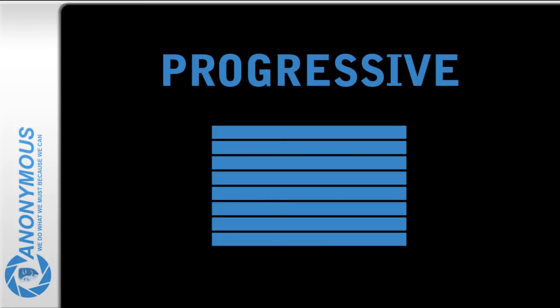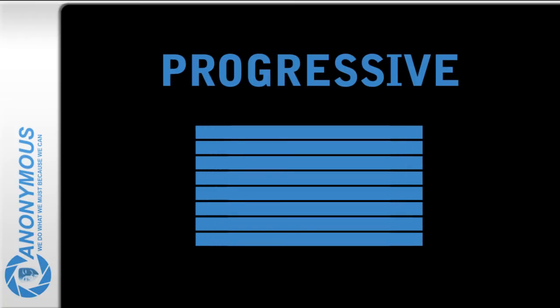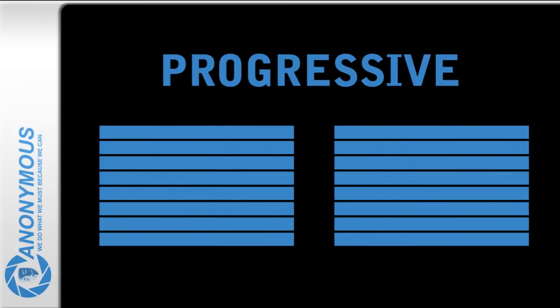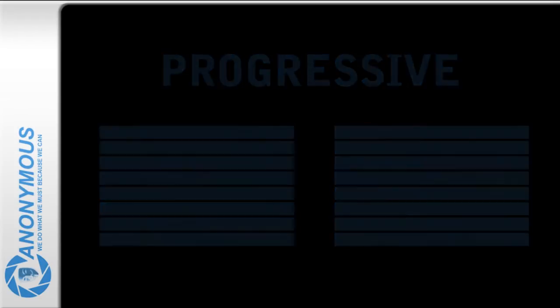When encoding, choose progressive instead of interlaced. This way, the images won't be split and you will receive a more fluent video to work with. The only problem is that the file size will increase. Now that you know this, you are ready to get your hands on the tools.